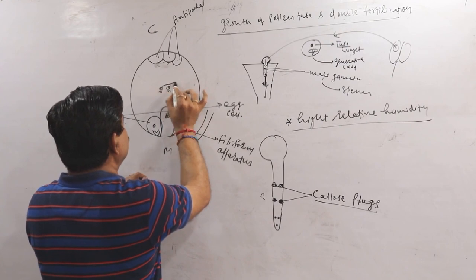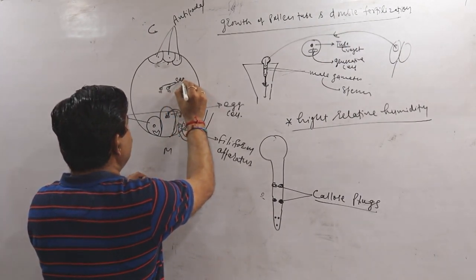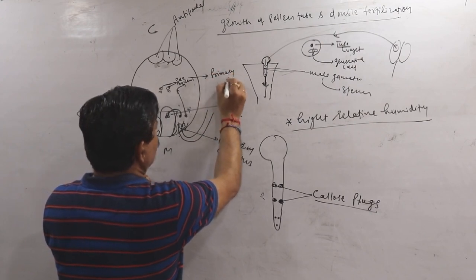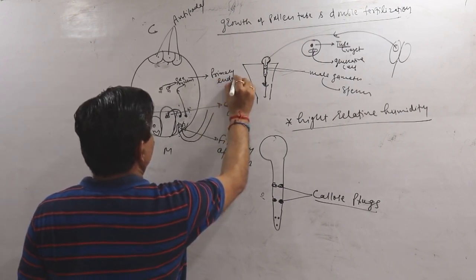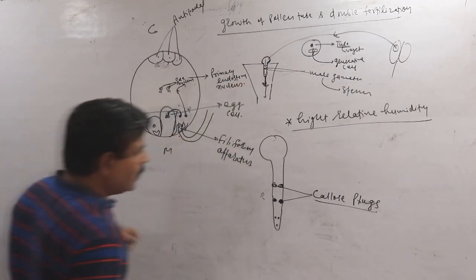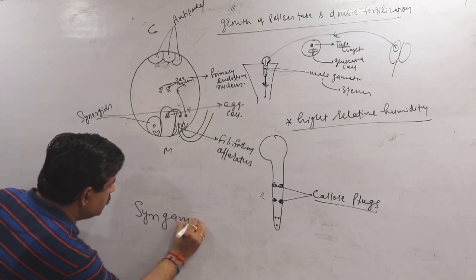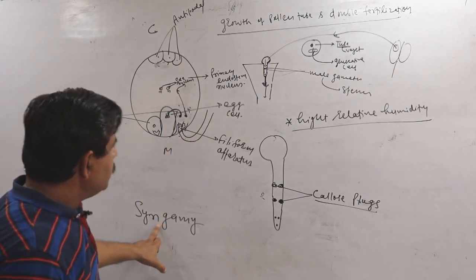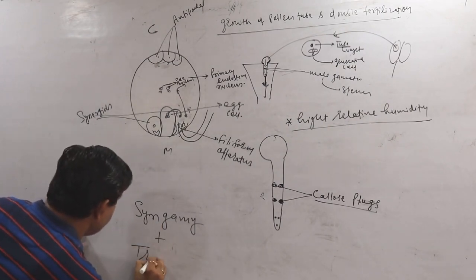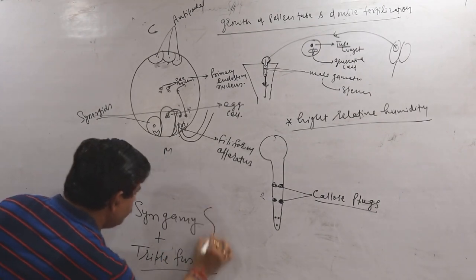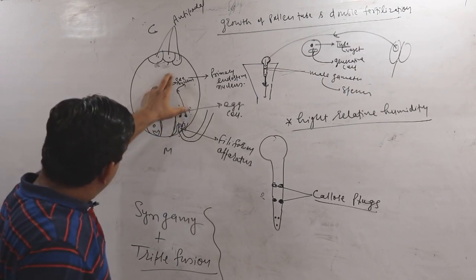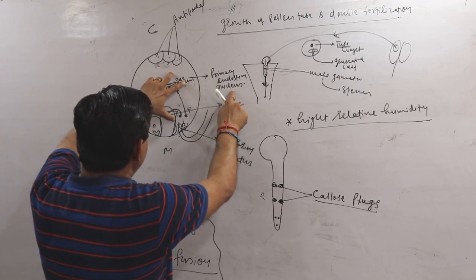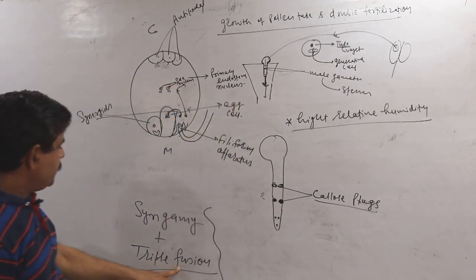The other male gamete fuses with the secondary nucleus and forms the primary endosperm nucleus. The fusion of the egg nucleus and the sperm nucleus is called syngamy. This is also called triple fusion — where the two polar nuclei fuse to form the secondary nucleus, and then that secondary nucleus fuses with one male sperm nucleus to form the primary endosperm nucleus.